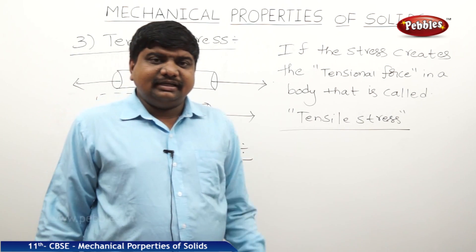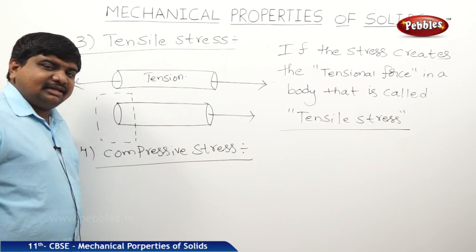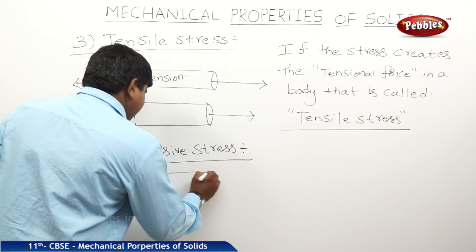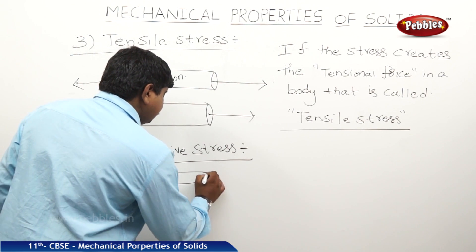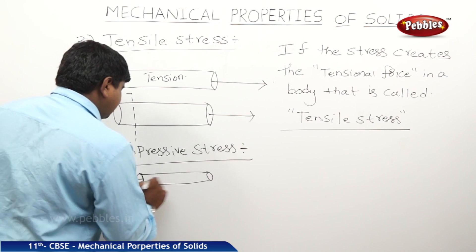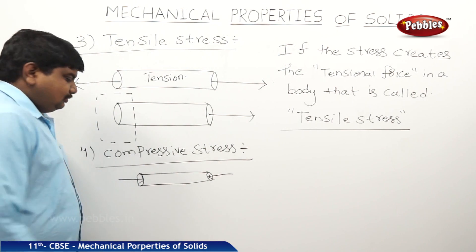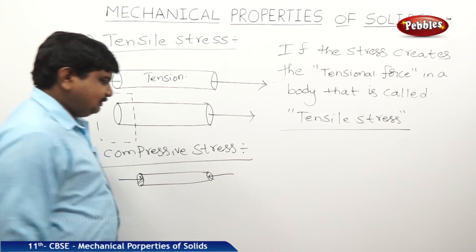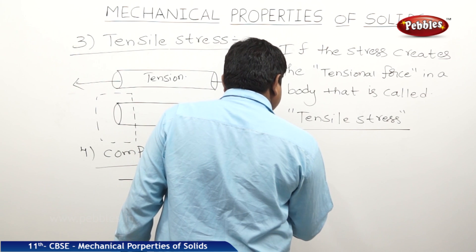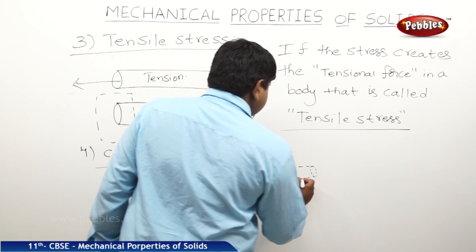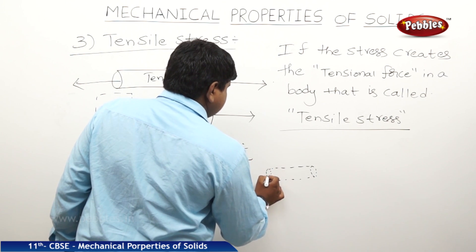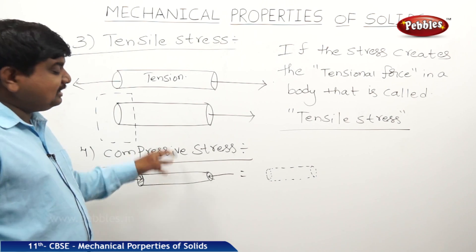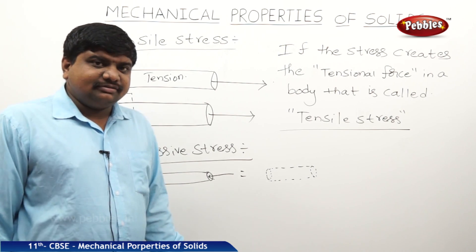Tensile stress can be created by the expansion of the body. Compressive stress is created to compress the body from both ends. That means if the force is applied on face to face, compression of the body will take place. If a stress creates compression in a body, that stress is called compressive stress.